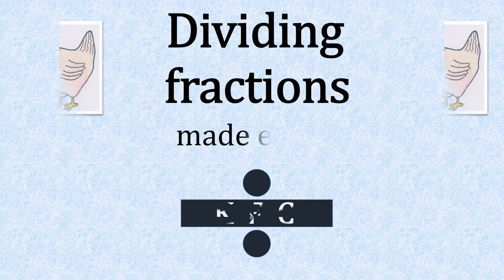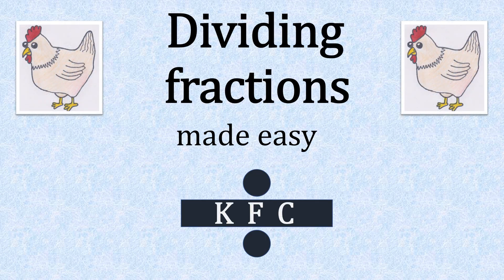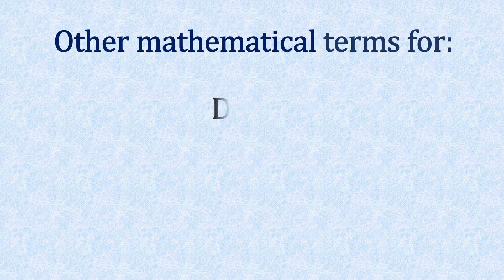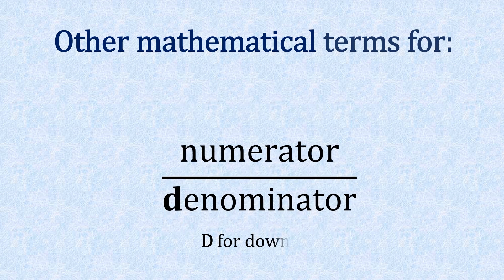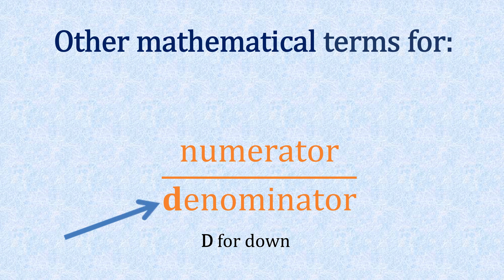Dividing fractions made easy: KFC method. Other mathematical terms we use are quotient, divide, goes into, and how many times. Here's another fact we need to know: the numerator and denominator. If you get confused, remember D for down—that's where the denominator goes.